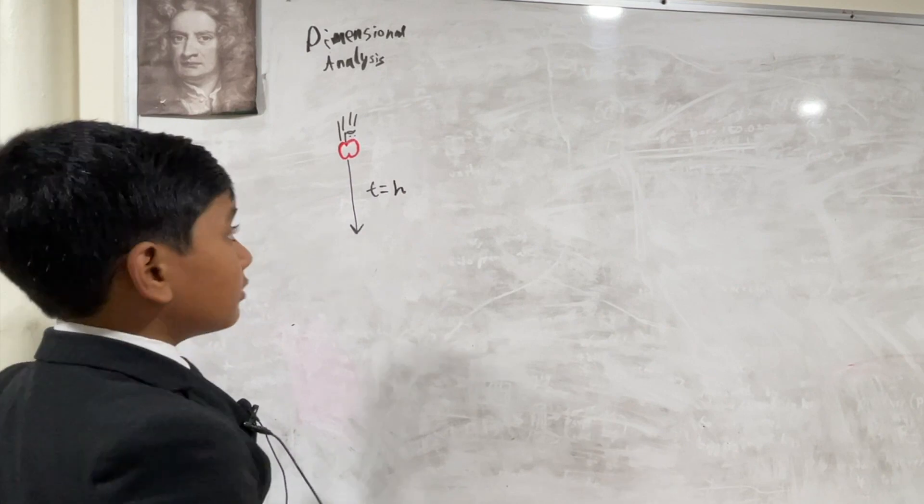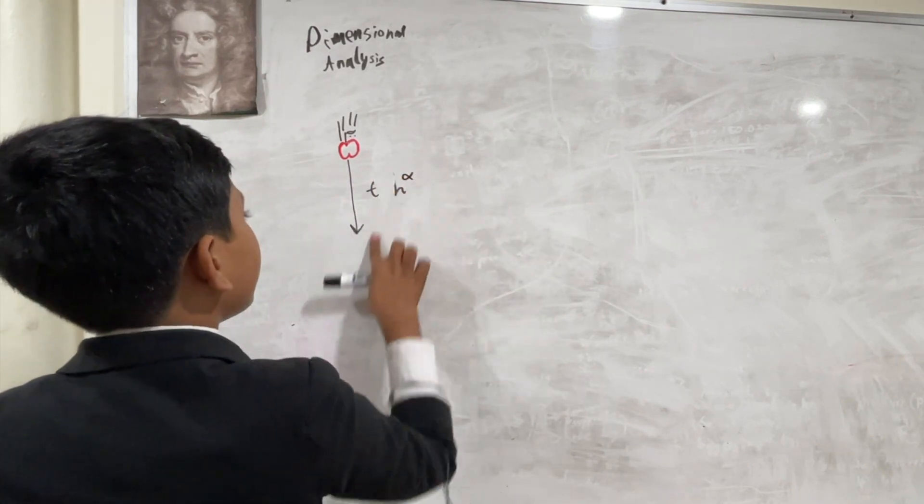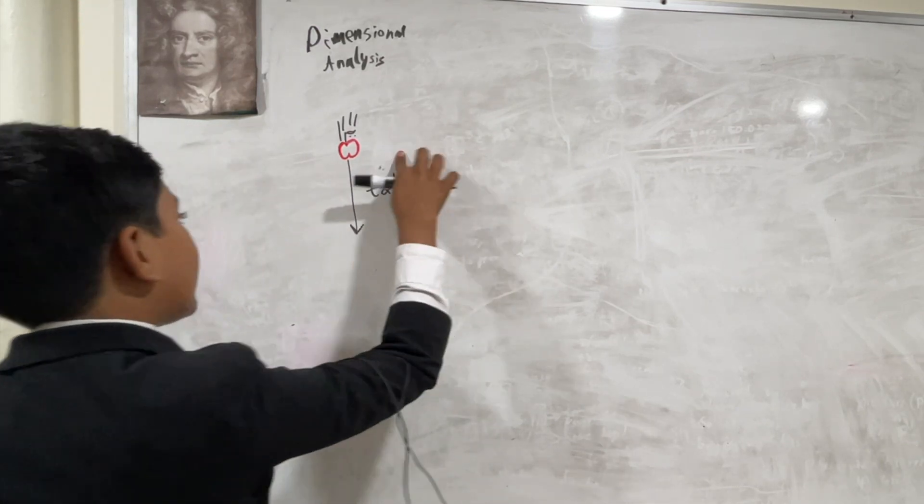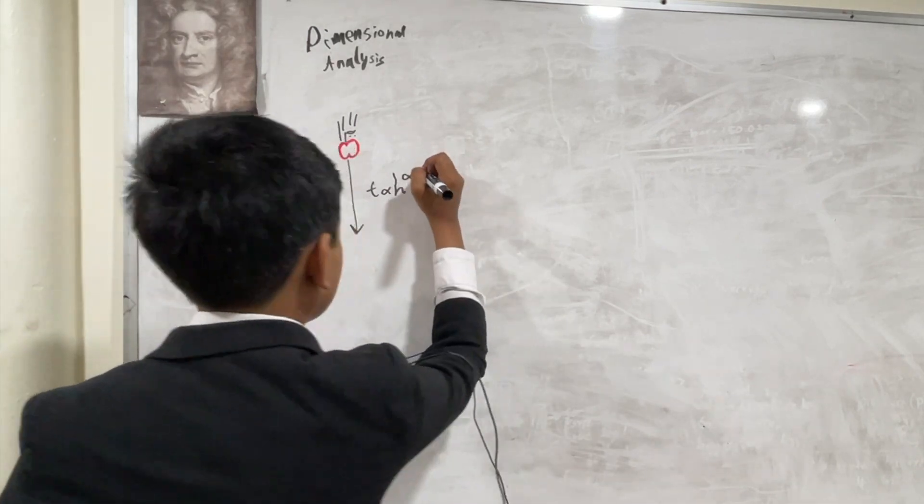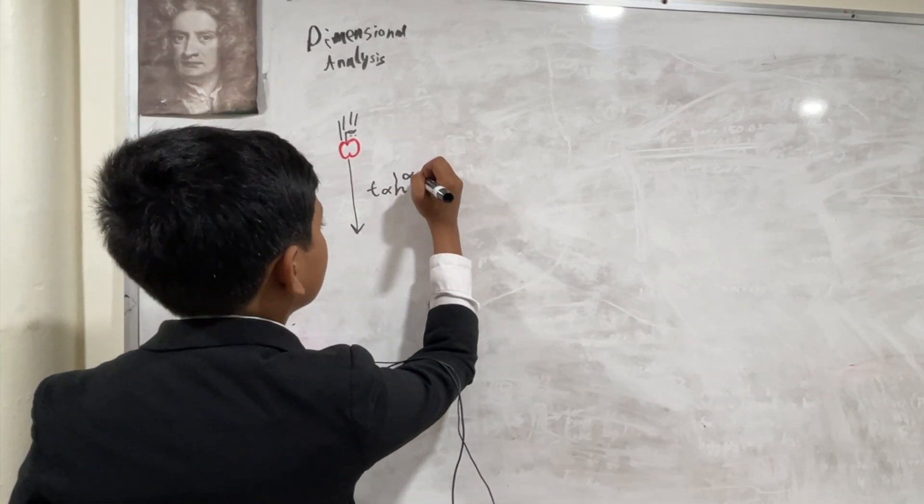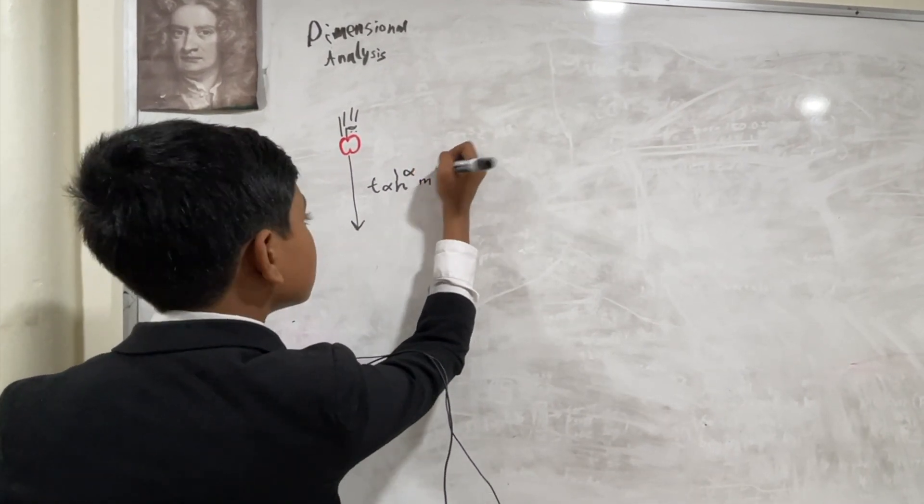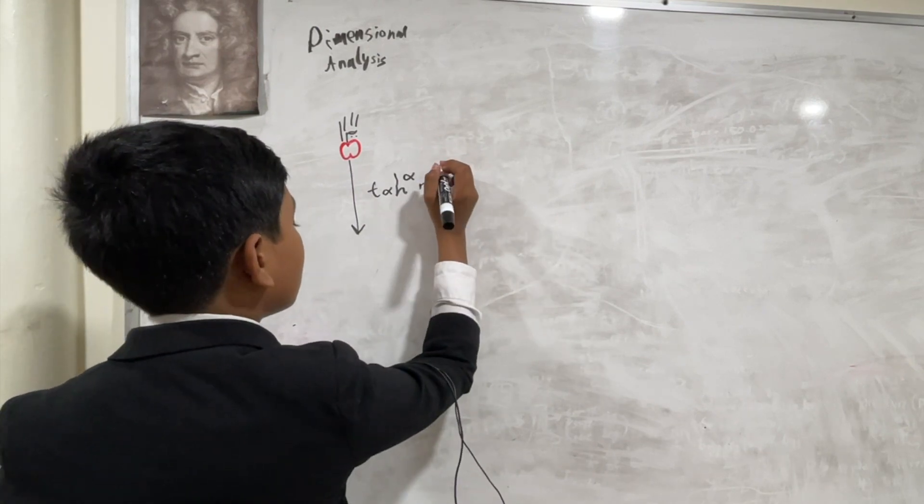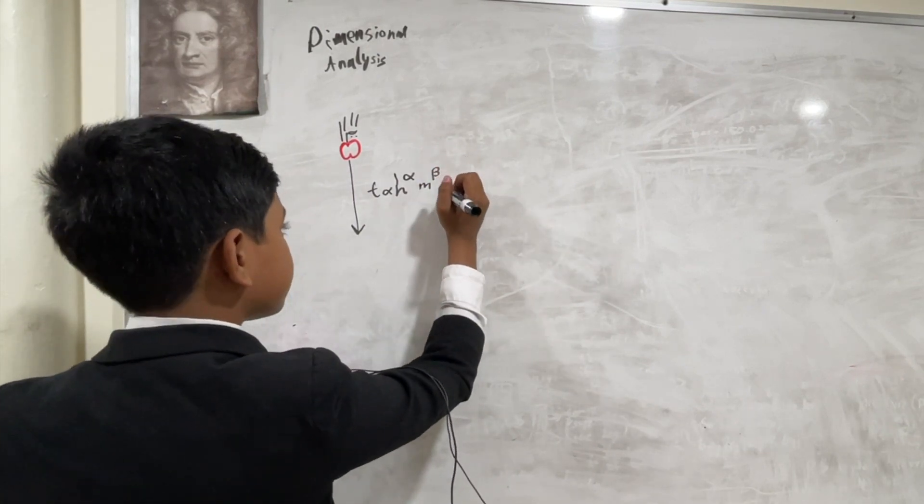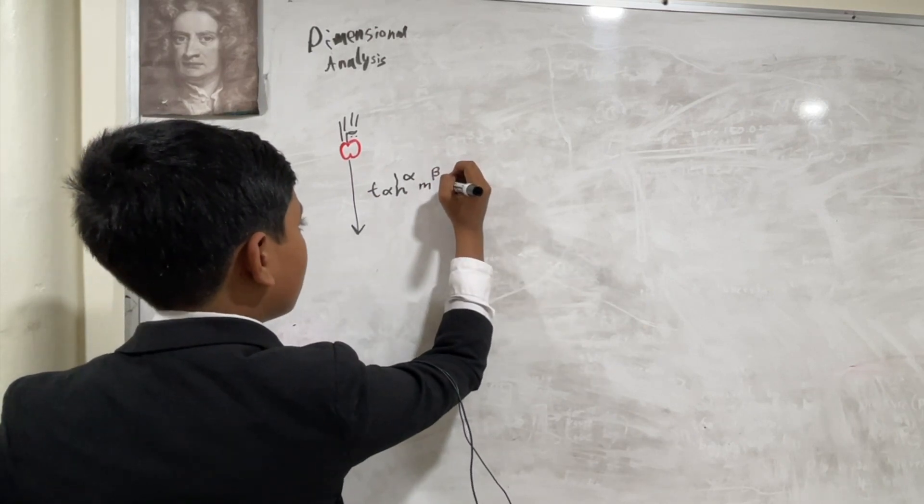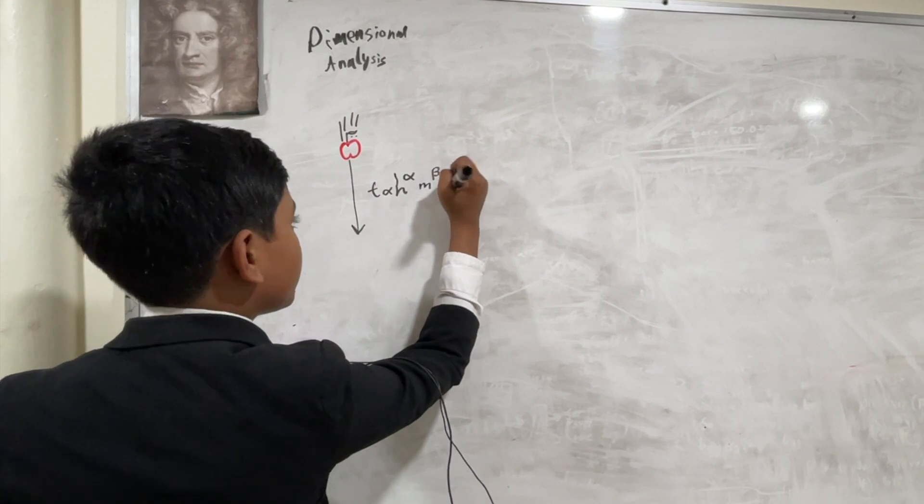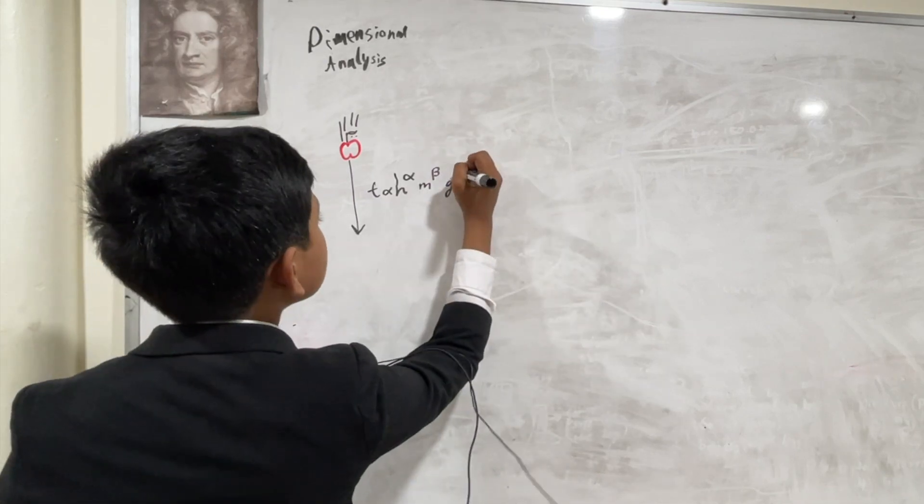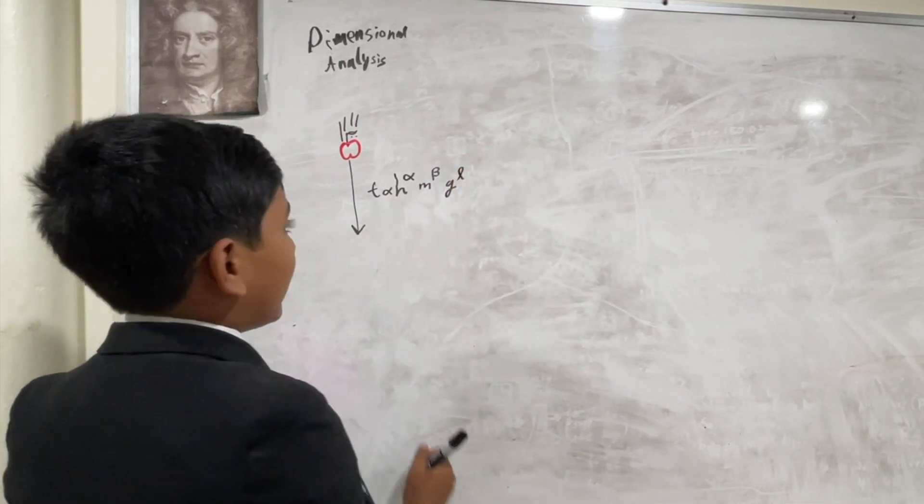But we don't know how height will relate to it. We'll put an alpha, and it may not be exactly equal to, just proportional, because we're going to be adding a constant to the mix. Then, let's say mass may also affect it. So, we're going to put mass to the beta. And then these may be the main factors, but also the gravitational acceleration on the planet you're on will also matter.